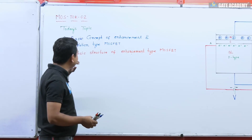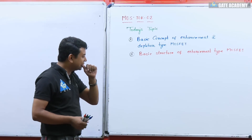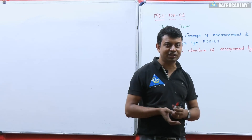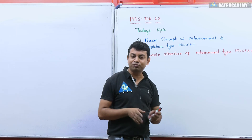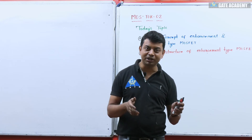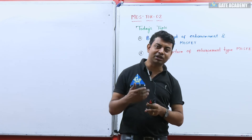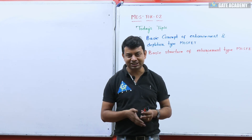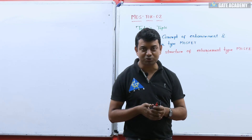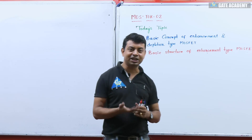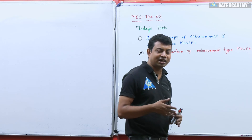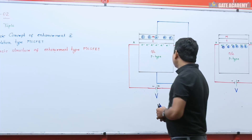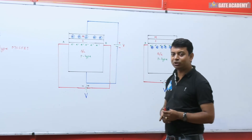The basic concept involves understanding enhancement type and depletion type MOSFET. In the previous lecture, MOSFET 1, we enhanced our knowledge and came to know that if you want to design an amplifier, you definitely need a dependent current or voltage source. That was the conclusion of MOSFET 1. Now in MOSFET 2, we are going to enhance that knowledge in terms of structure and the difference between enhancement and depletion type MOSFET.